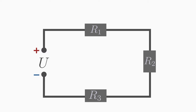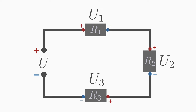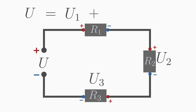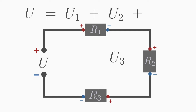In a series circuit, you will measure a different voltage across each resistor: voltage U1 across the first resistor, U2 across the second resistor, and U3 across the third. The total voltage U is the sum of the individual voltages: U is equal to U1 plus U2 plus U3.